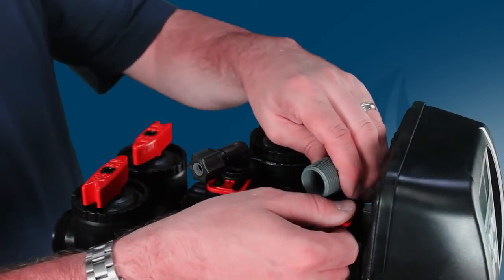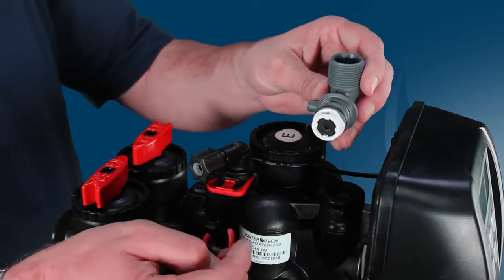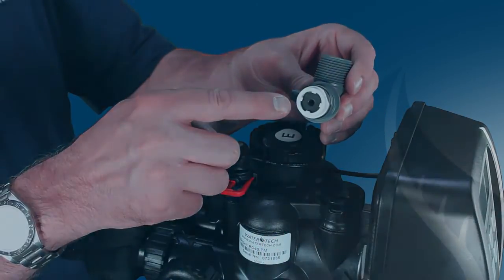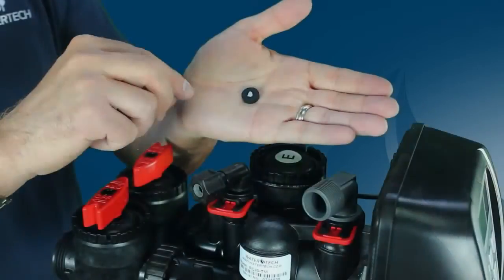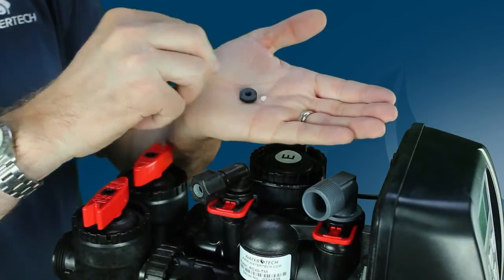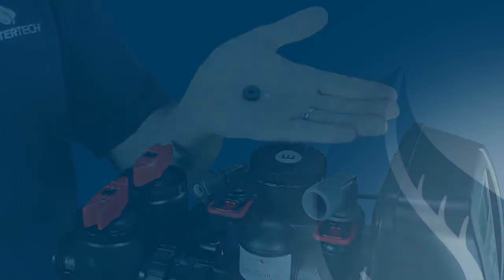Next, check the drain line flow control button and brine line flow control button for scale or clogging. Look to see if the drain line flow control button is clogged. If it is, you'll need to clean or replace it.